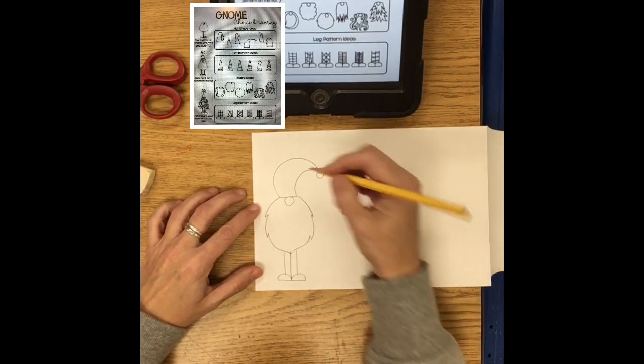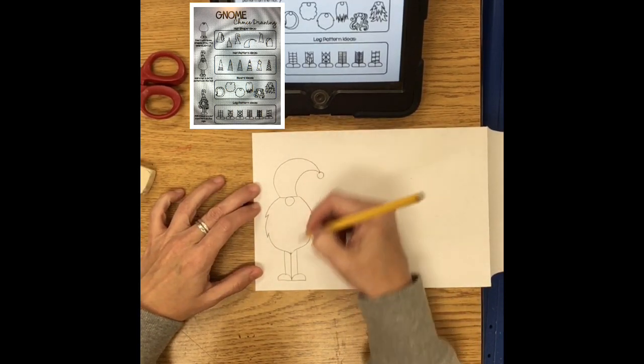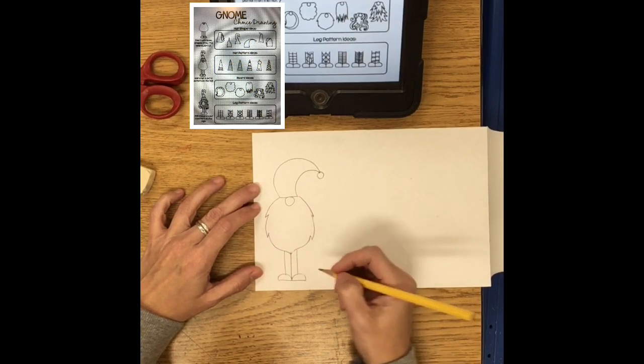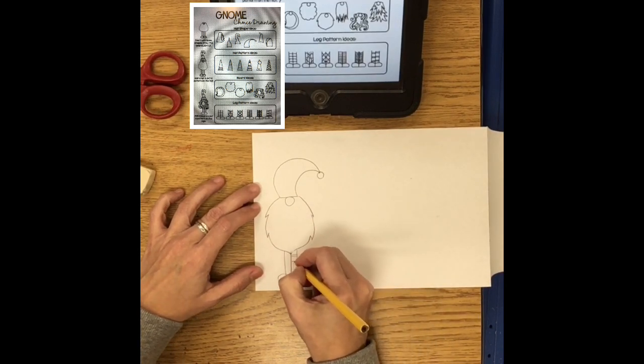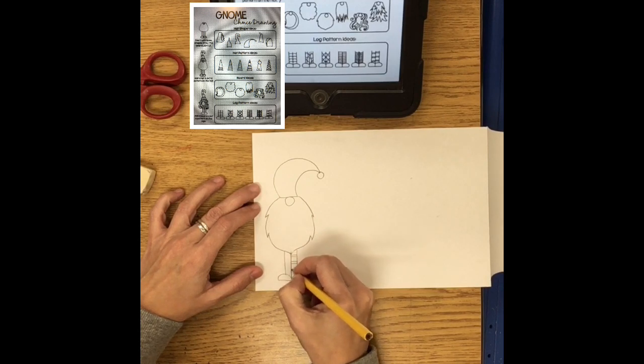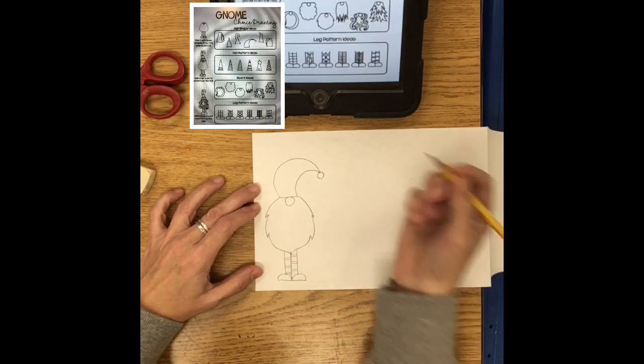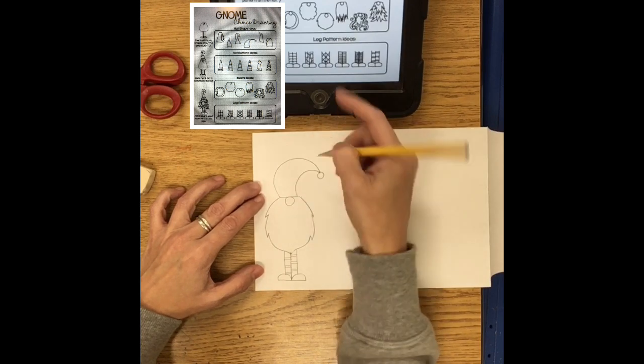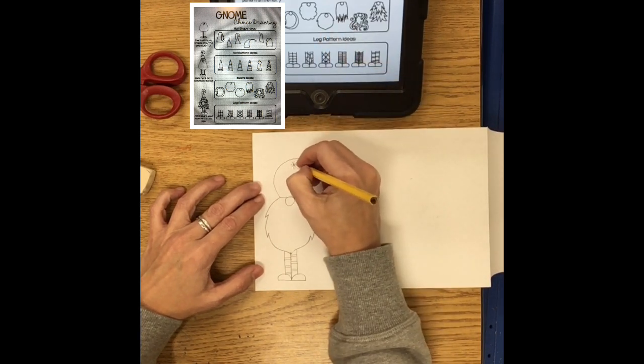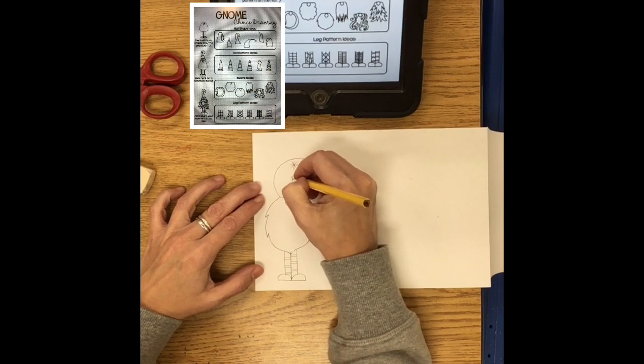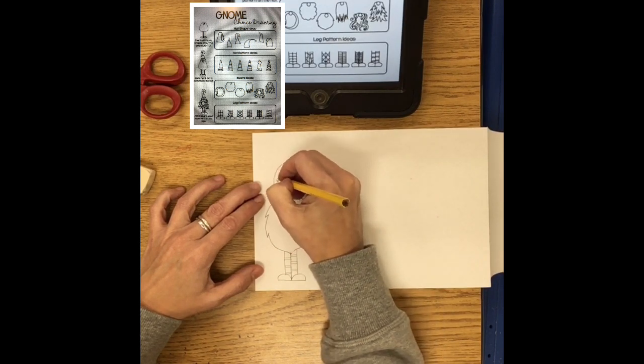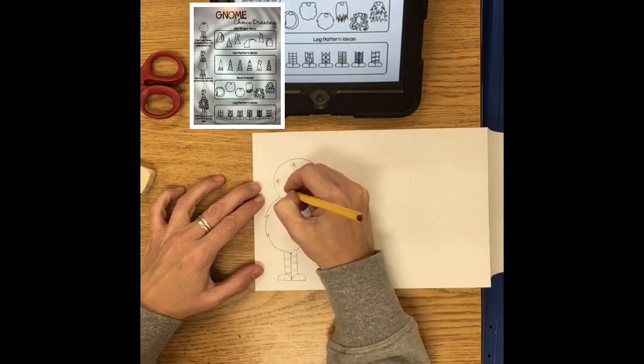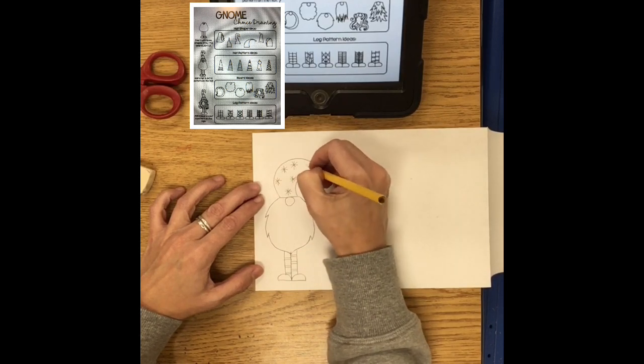All right so then I'm going to add the patterns on his hat and on his little legs here. So I'm going to do stripes for his little gnome socks and I'm going to kind of offset them so they're not lining up perfectly. And then I think I'm gonna do a snowflake pattern and like I said you can do other things there's tons of different patterns that you can come up with you can even give them a Zentangle hat if you want to.